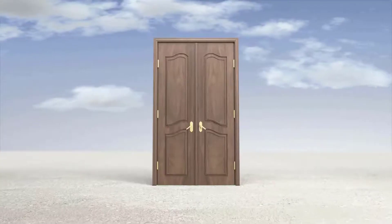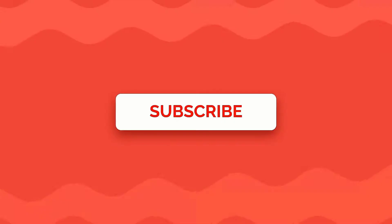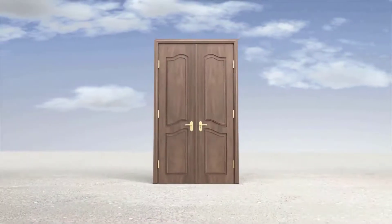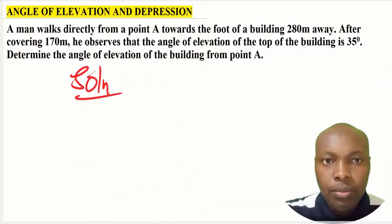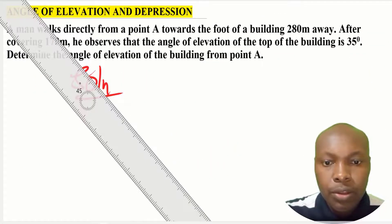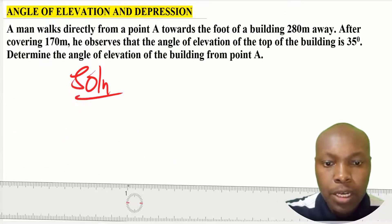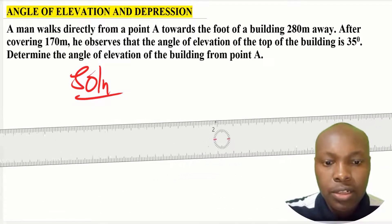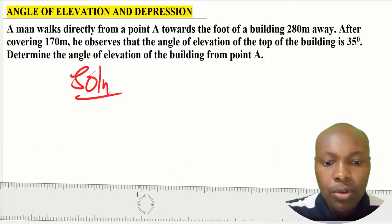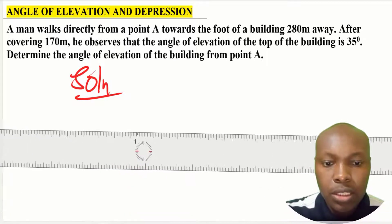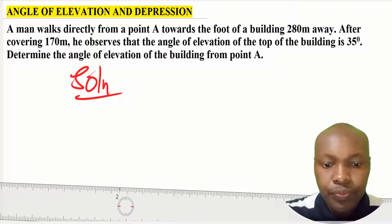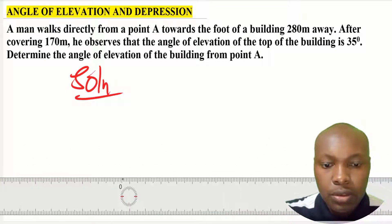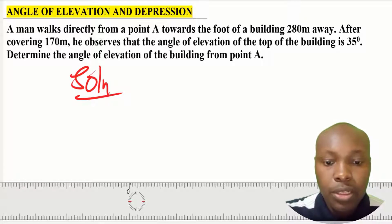So, let's go straight to the solution. Now, we shall begin by sketching this diagram, or having this statement now sketched as a diagram to help us be able to solve the question easily. So, let's draw. I'm drawing that straight line where the foot of the building is in point A.